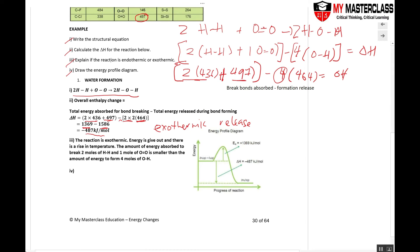Explain if the reaction is endo or exo. This reaction is exothermic. Energy is given out and there's a rise in temperature. The energy absorbed to break two moles of H single bonds and one mole of O single bond is smaller. Small number minus big number. Then I can get a negative value. Then the amount of energy, write it in. Release. To form four moles of OH bonds.